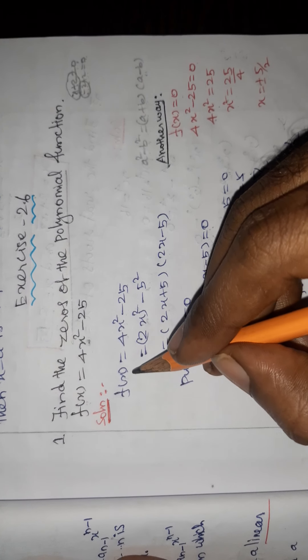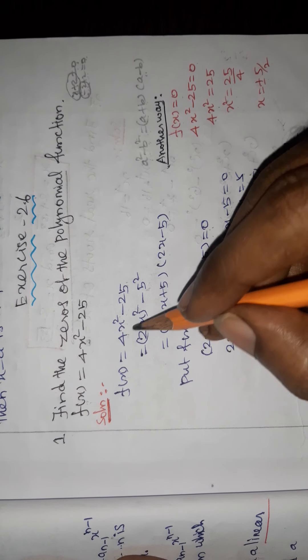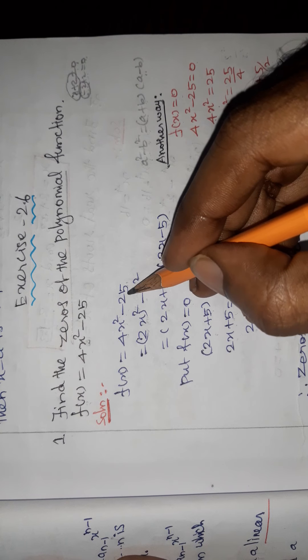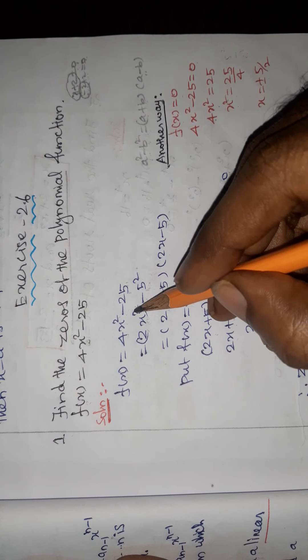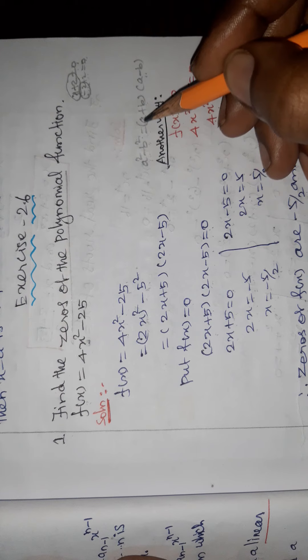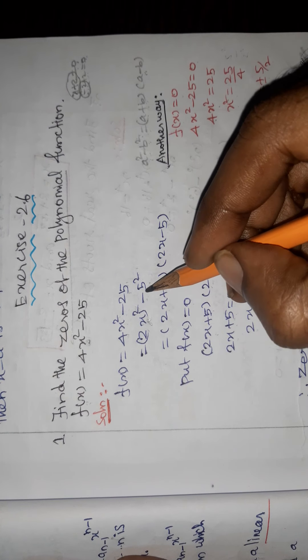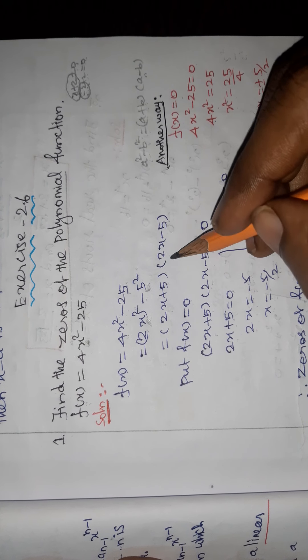Solution: f(x) = 4x² - 25. We can write 4x² as (2x)² and 25 as 5². So this fits the form a² - b², where a = 2x and b = 5. This factors as (2x + 5)(2x - 5).